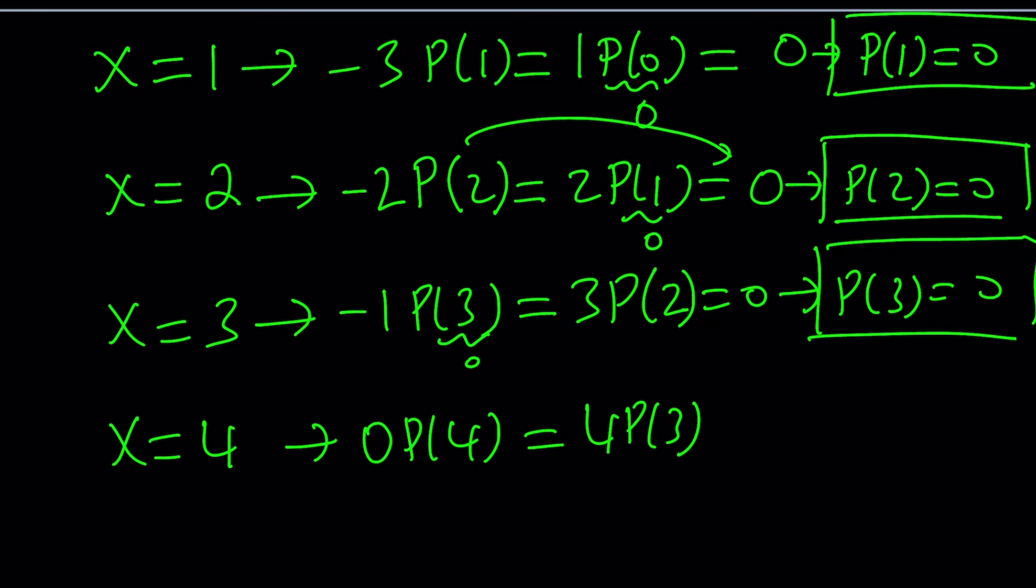Do we know P of 3? Yes, it's 0, but this is already 0. So, this doesn't necessarily mean that P of 4 is 0. So, this is kind of inconclusive.